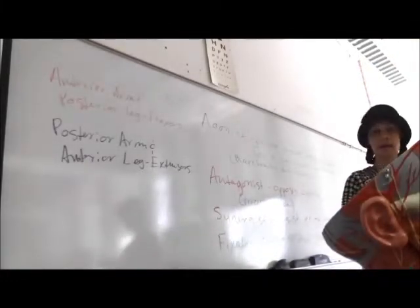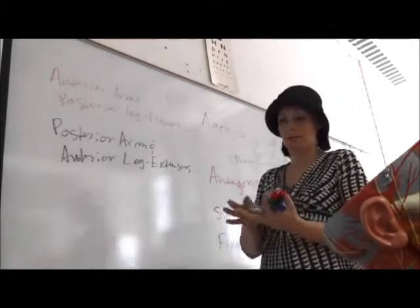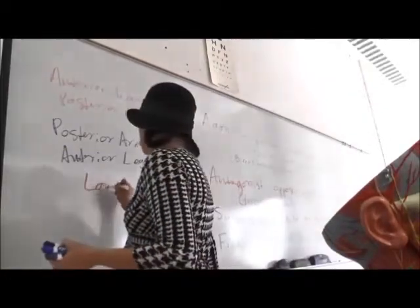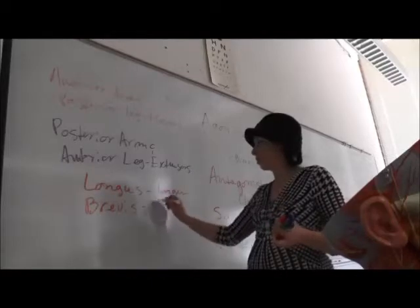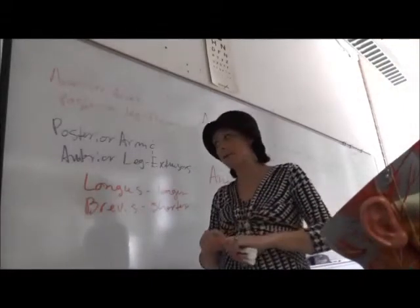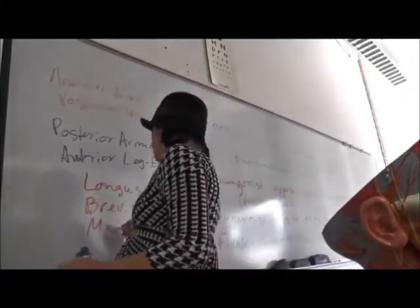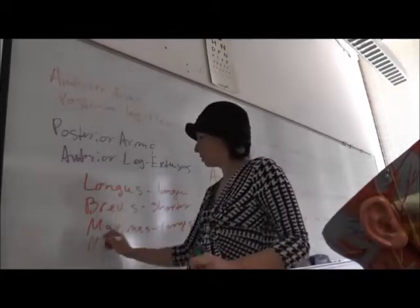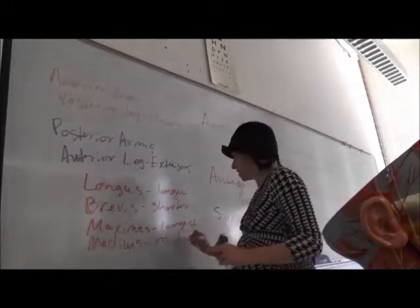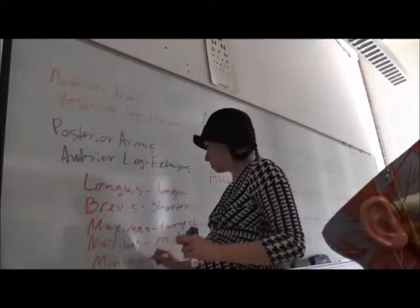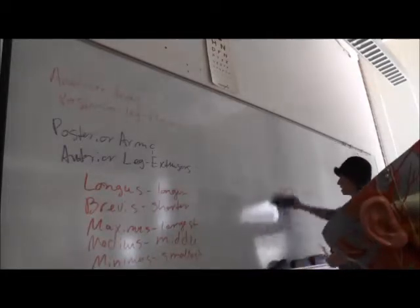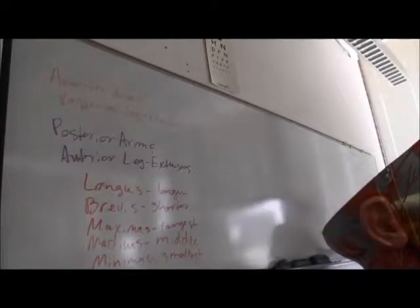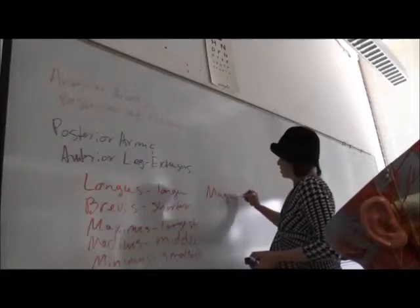We also name muscles based on size. For example, adductor longus and adductor brevis — longus is the longer one, brevis is shorter. Gluteus maximus, medius, and minimus — maximus is biggest, medius is an intermediate or middle size, and minimus is the smallest. We also use magnus for large, as in adductor magnus and adductor longus, so magnus means large.